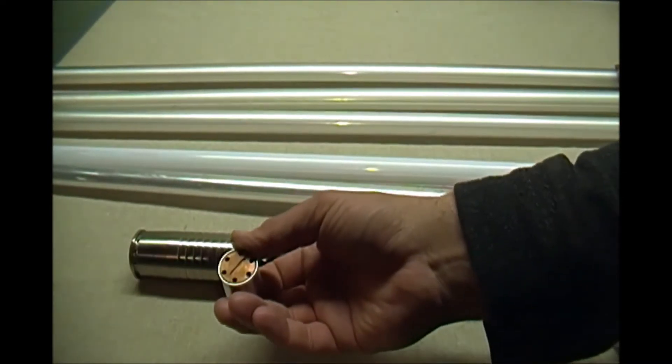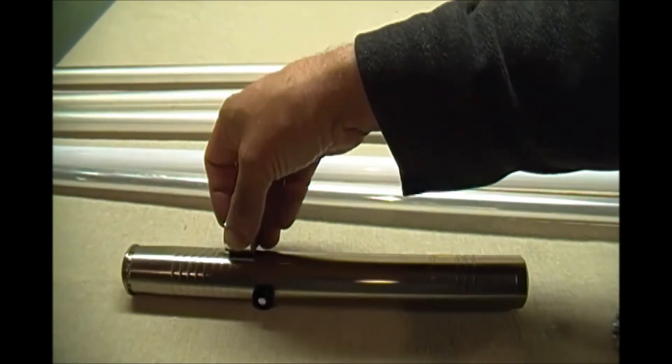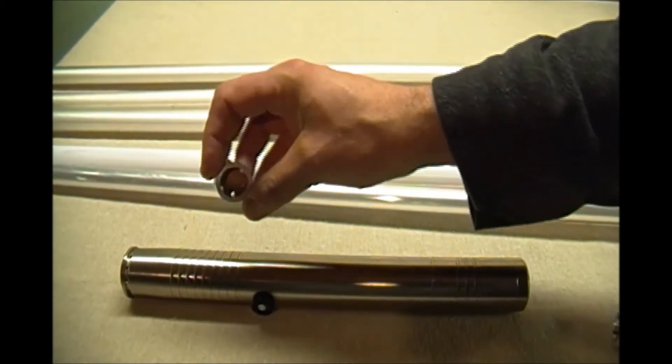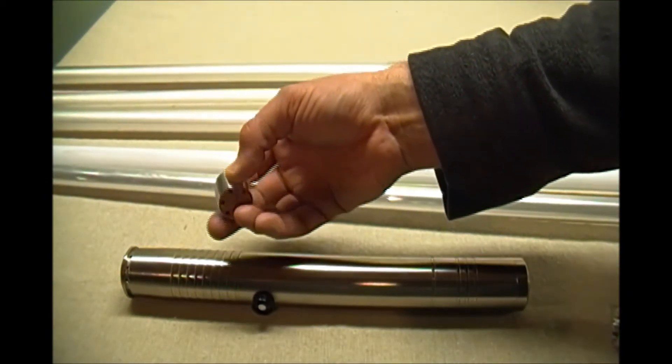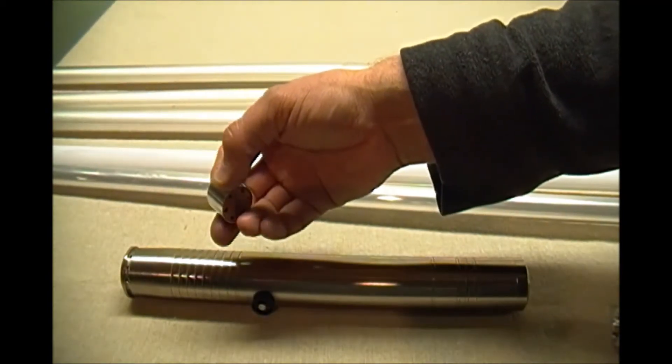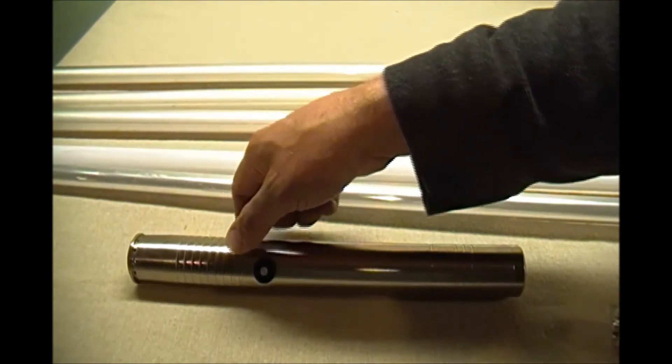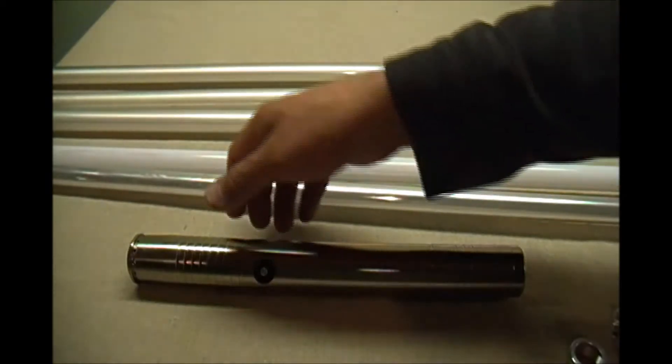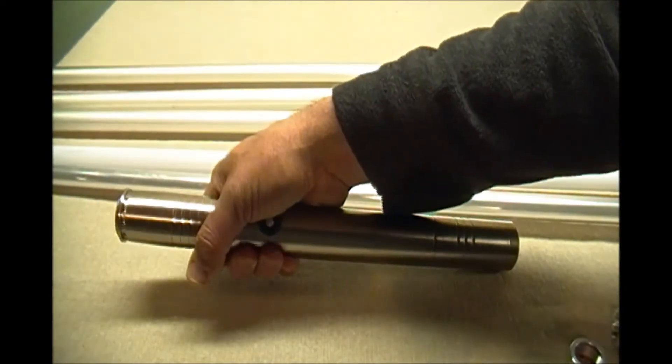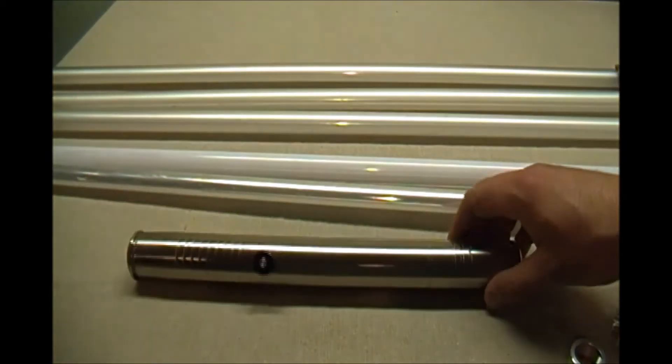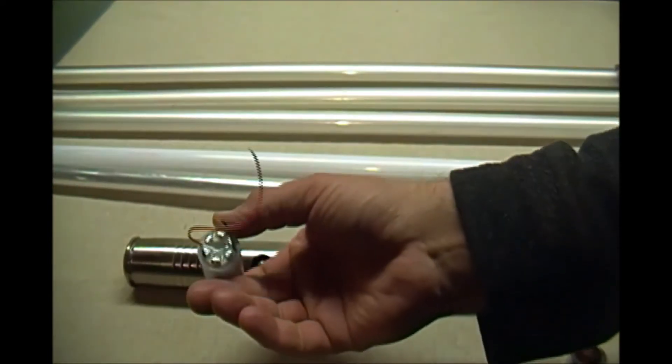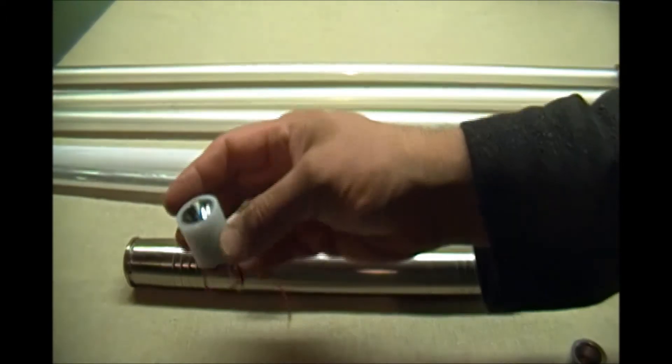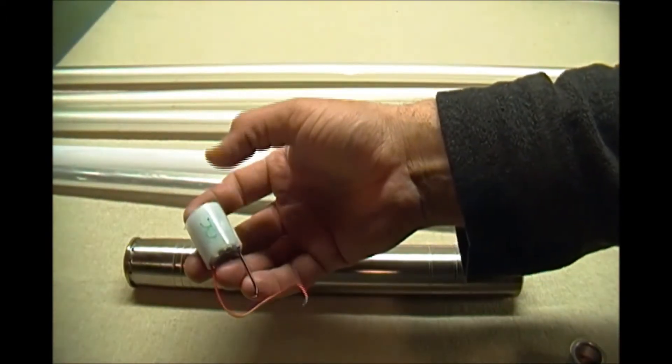It's a module with a copper heat sink, sitting right about there. Copper is an excellent conductor of heat and will draw the heat away from the LED and into the saber body. When you're using this saber, you'll notice it gets warm right around here - that's what it's supposed to do. That's a good thing; it means the heat's going somewhere. With a plastic hot glue mess like that, there's nowhere for the heat to go.